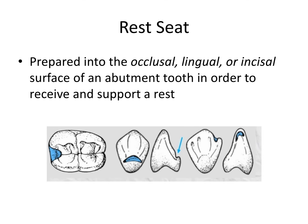You can see the example here of an occlusal rest, here's an example of a lingual or cingulum rest as it's prepared into the cingulum of these teeth, and an incisal rest which is prepared into the incisal surface. It depends on what teeth you're talking about and what surface you choose to use. The rest is part of the metal framework, whereas the rest seat is prepared into the tooth, and there's a different kind of rest and corresponding rest seat for each of these three surfaces.